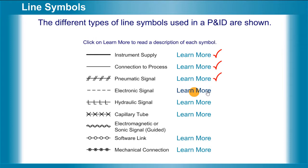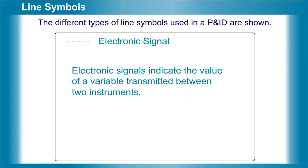Electronic signal. Electronic signals indicate the value of a variable transmitted between two instruments.